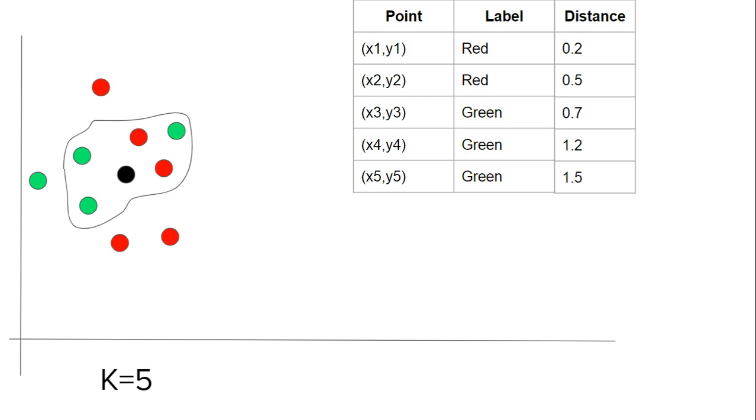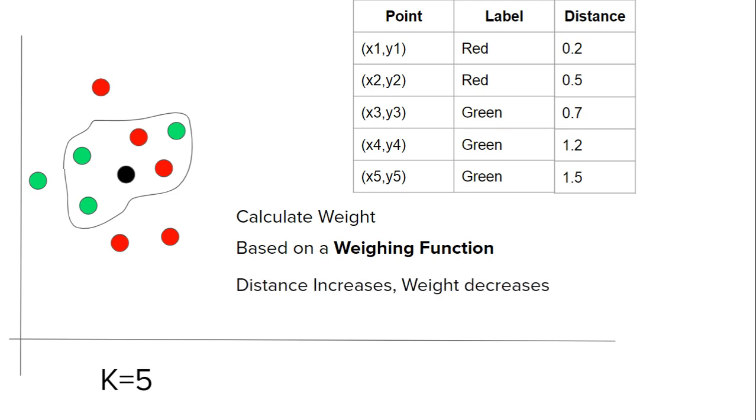Now this is what we do differently in weighted KNN. We calculate the weight using a weighing function. A weighing function could be anything, but you have to follow a simple rule: as the distance between the query point and the training point increases, the weight should decrease.